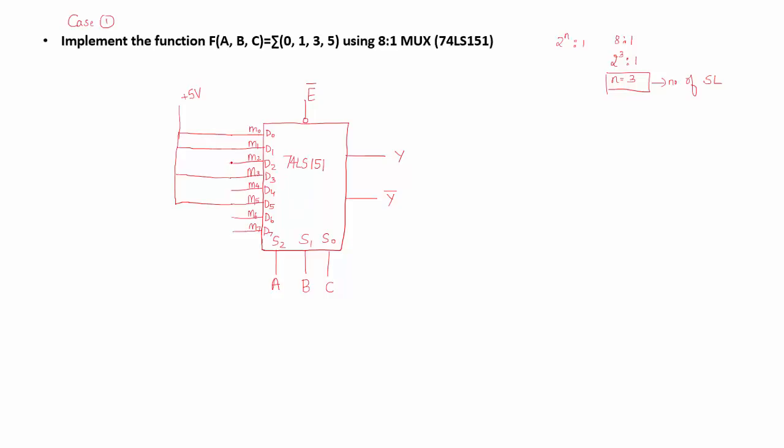The remaining data lines M2, M4, M6, and M7 I must connect to ground. So this is your final diagram. You have implemented the function using a multiplexer now.